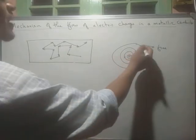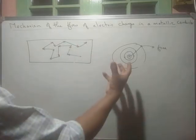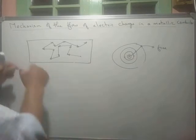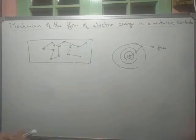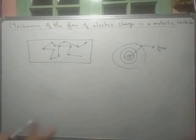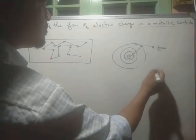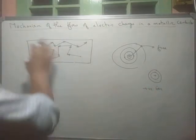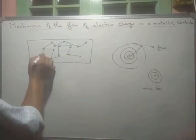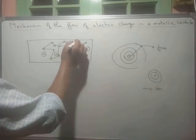In a conductor, every atom can produce one free electron. So within a small piece of conductor containing millions of atoms, we get millions of free electrons. When a free electron leaves an atom, the atom becomes a positive ion. So in a conductor, we have both free electrons and positive ions. The positive ions are shown with a circle and a plus sign, and the dots represent the free electrons.